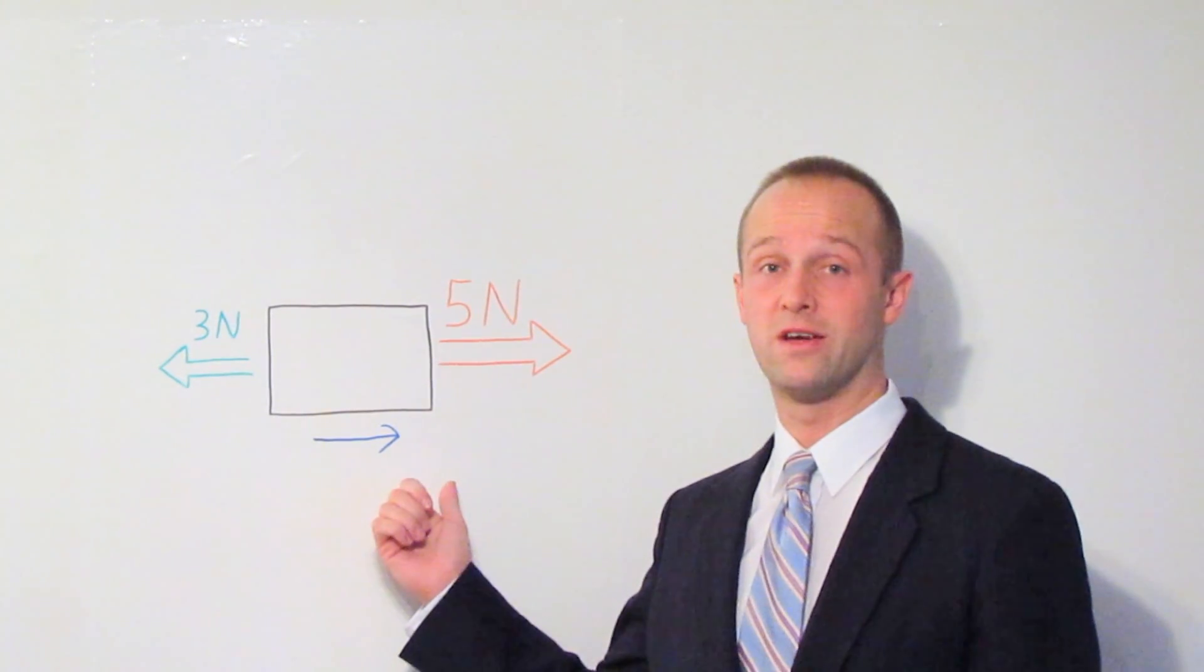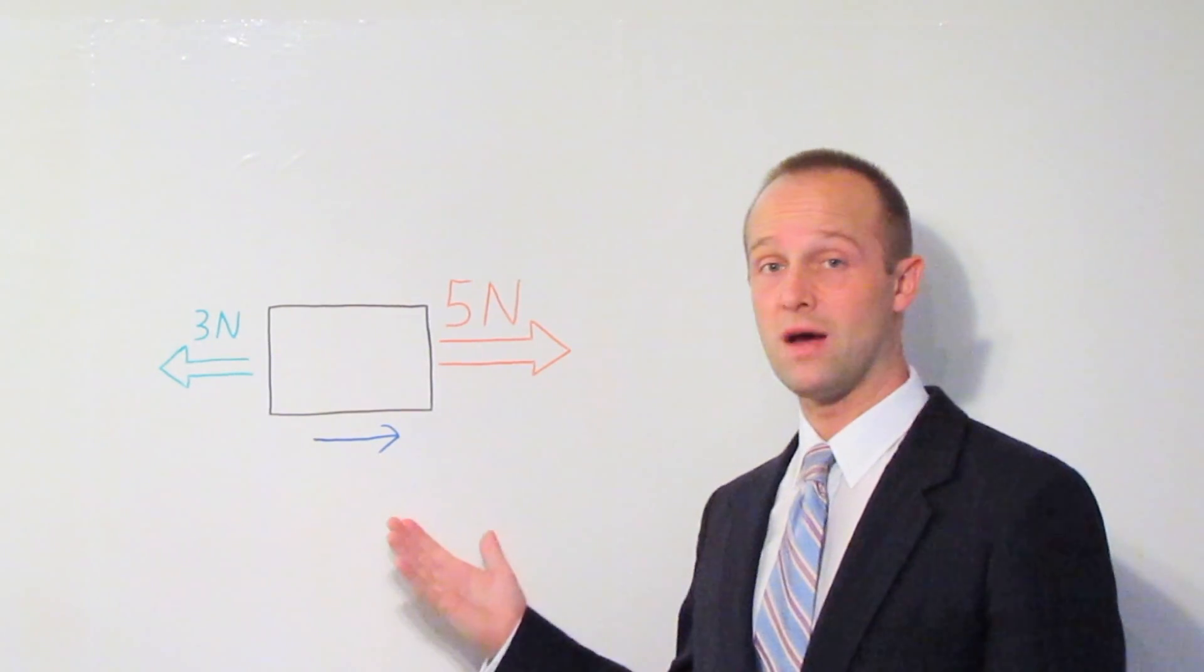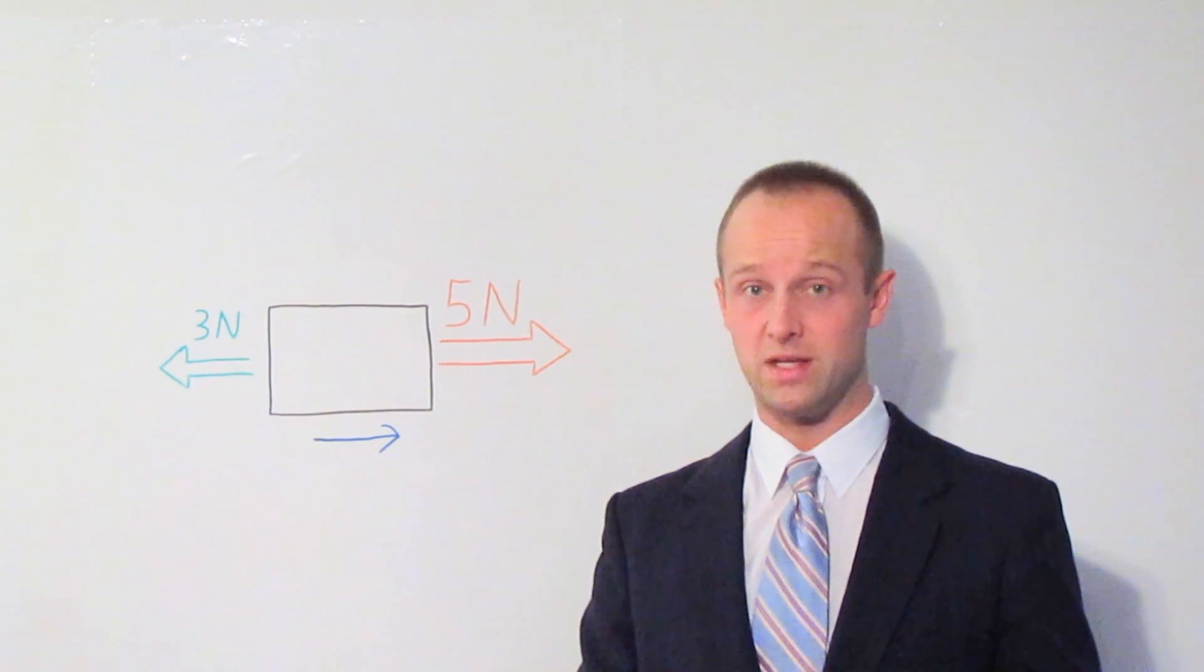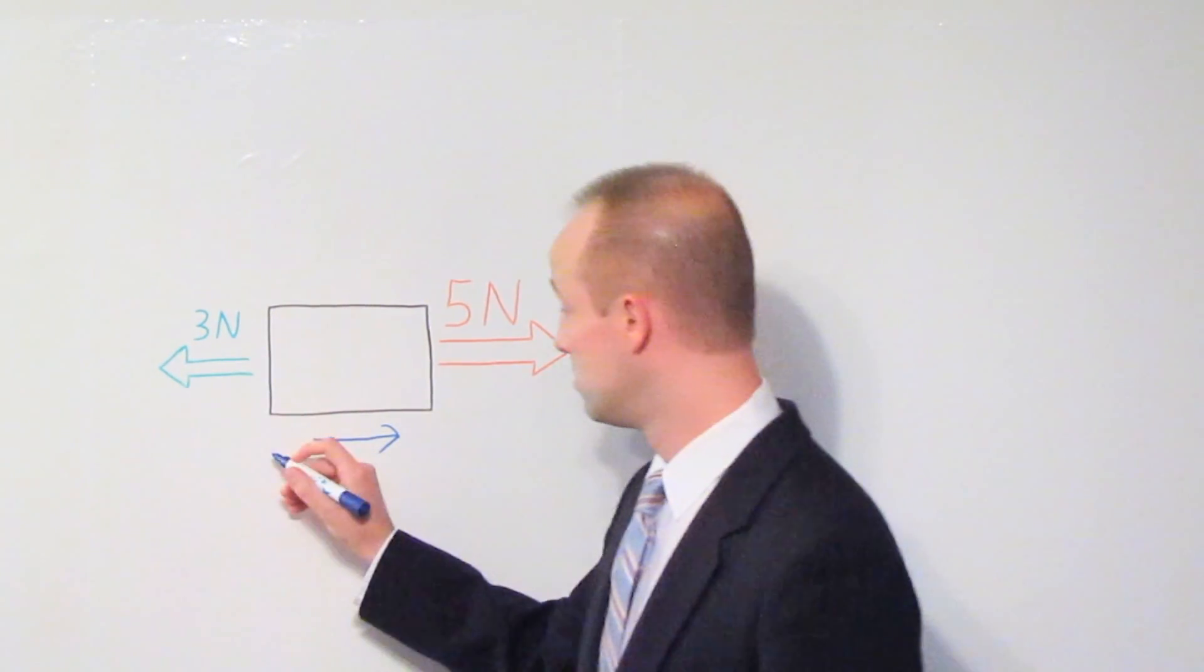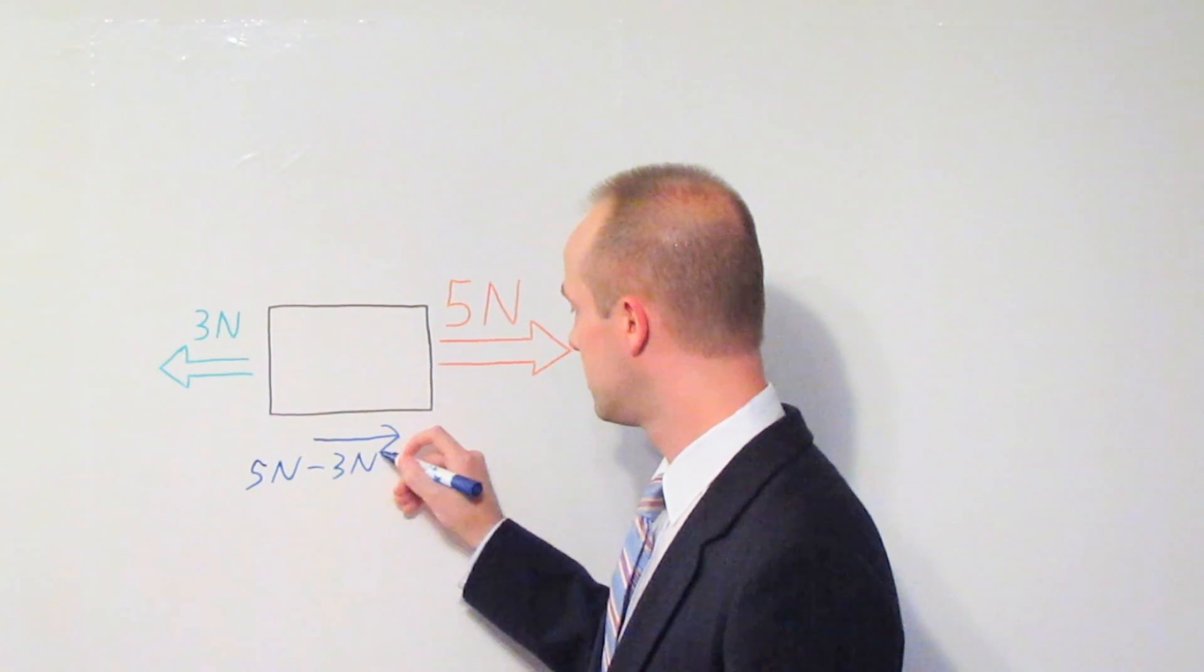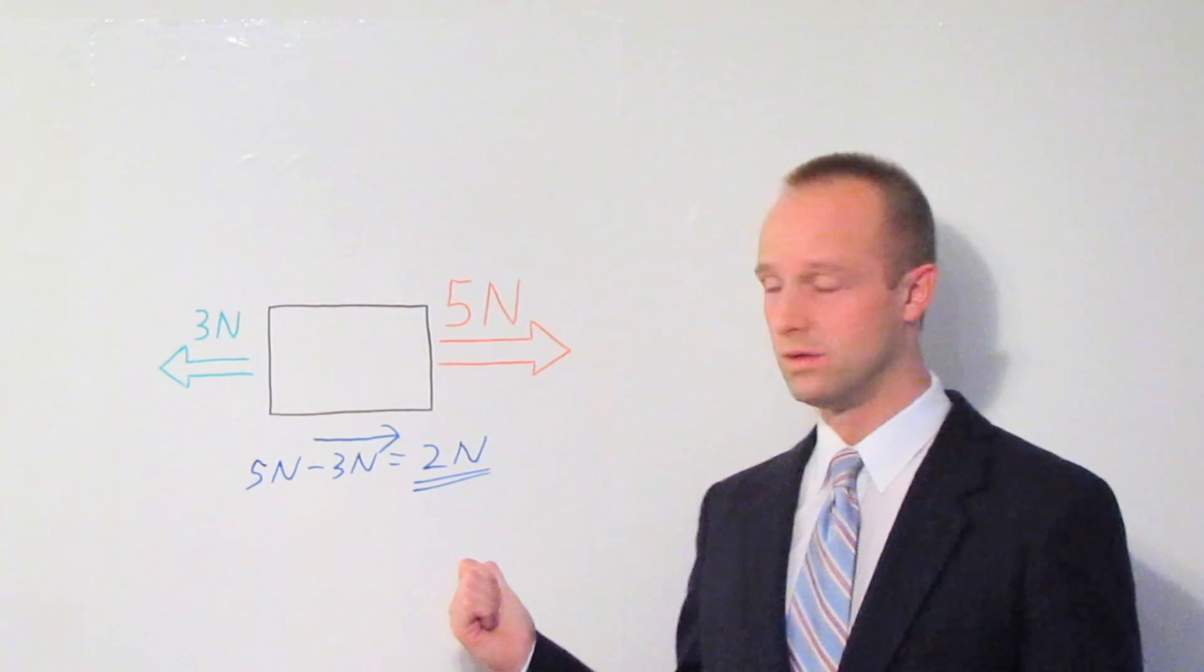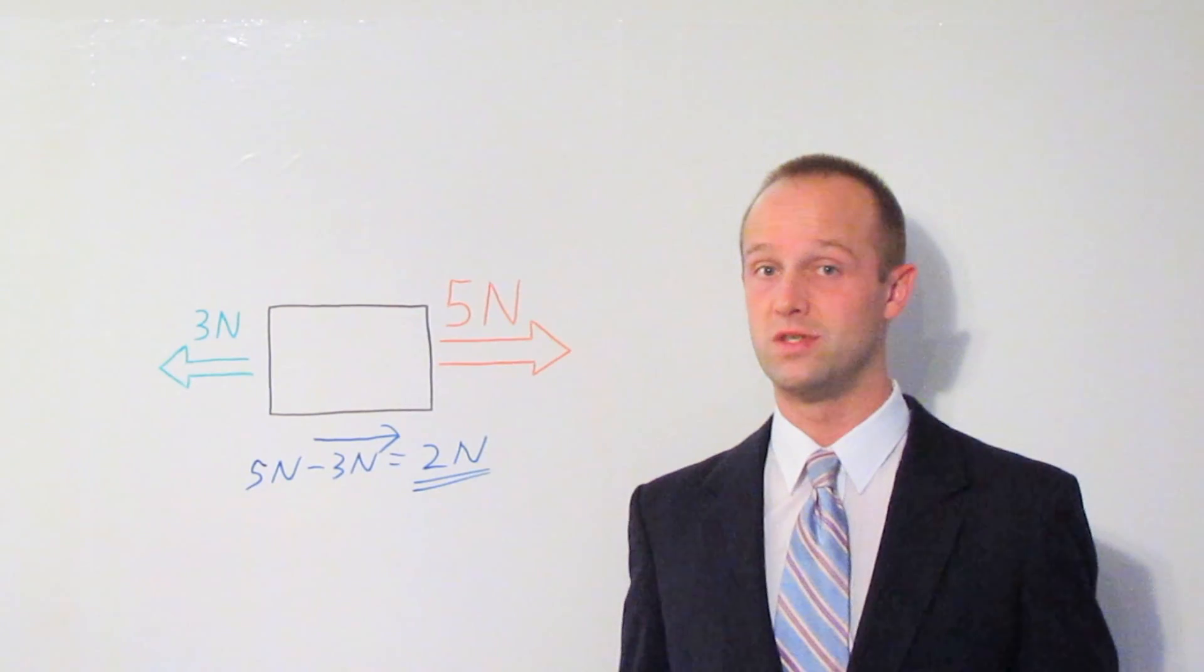So first step, which way is it going to go? That way, the direction of the biggest one. And then we just need to work out the magnitude, the size of that force. And that again is incredibly easy and incredibly intuitive. All you need to do is the big number take away the small one. So five newtons minus three newtons equals two newtons. There we go. There's the answer. That's all there is to it. That's how you work out a resultant force.